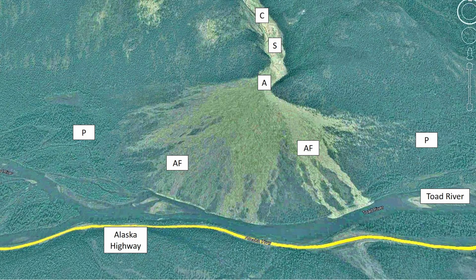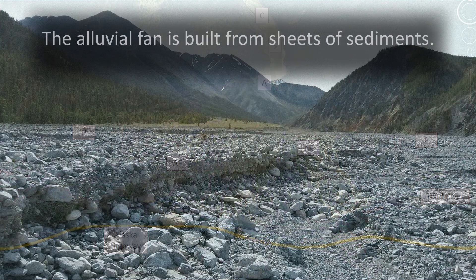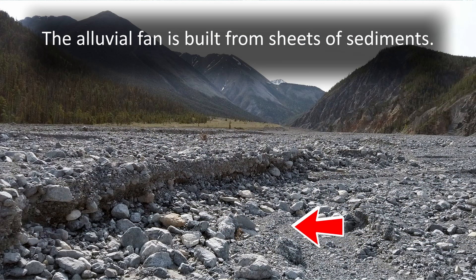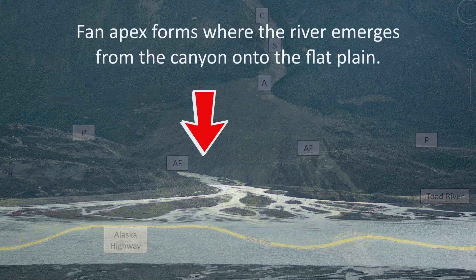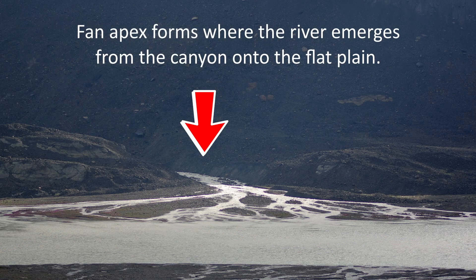The alluvial fan was created by building up sheet upon sheet of boulders to sand-sized grains of sedimentary material. The fan apex labeled A formed when the rushing river started to slow down when it emerged from the canyon onto the flat plain.